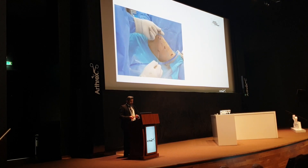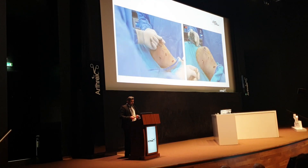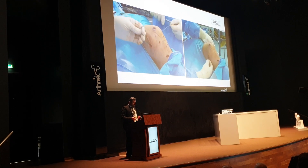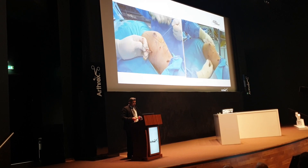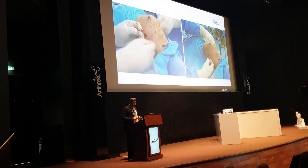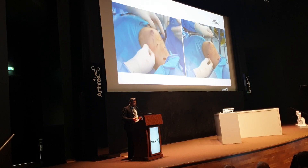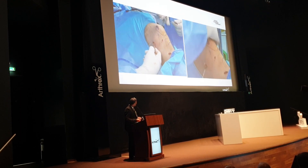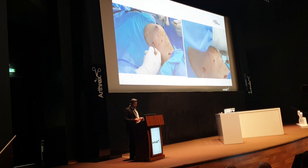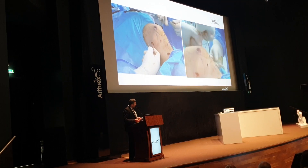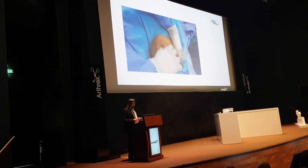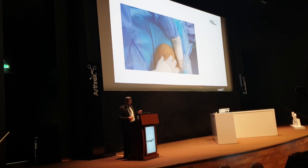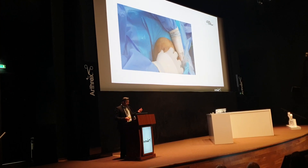After that, you pass the graft through the femoral tunnel using a shuttle suture. It is very important to have your guide wire in the tunnel before passing the graft, to make it easy to locate. Make sure that the graft is not tight — this is very critical. You can load the screw before final advancement, just check the stability, and then advance the screw.